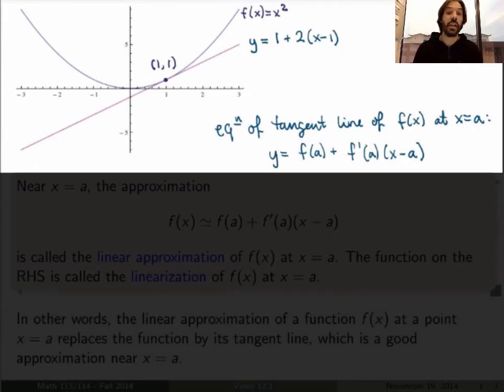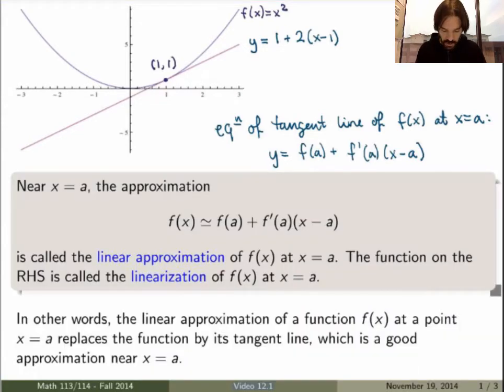And the main point here is that the function could be extremely complicated and the tangent line is always a line. So the tangent line is always a very simple equation, so it makes sense to try to use it to approximate a function because pretty often it's a lot easier to deal with than the function itself. So we call that a linear approximation. More precisely, we say that the linear approximation of a function f(x) at x equals a is the idea of replacing the function by the equation of its tangent line at x equals a. And the function on the right hand side which gives the tangent line we call the linearization of our function f(x).